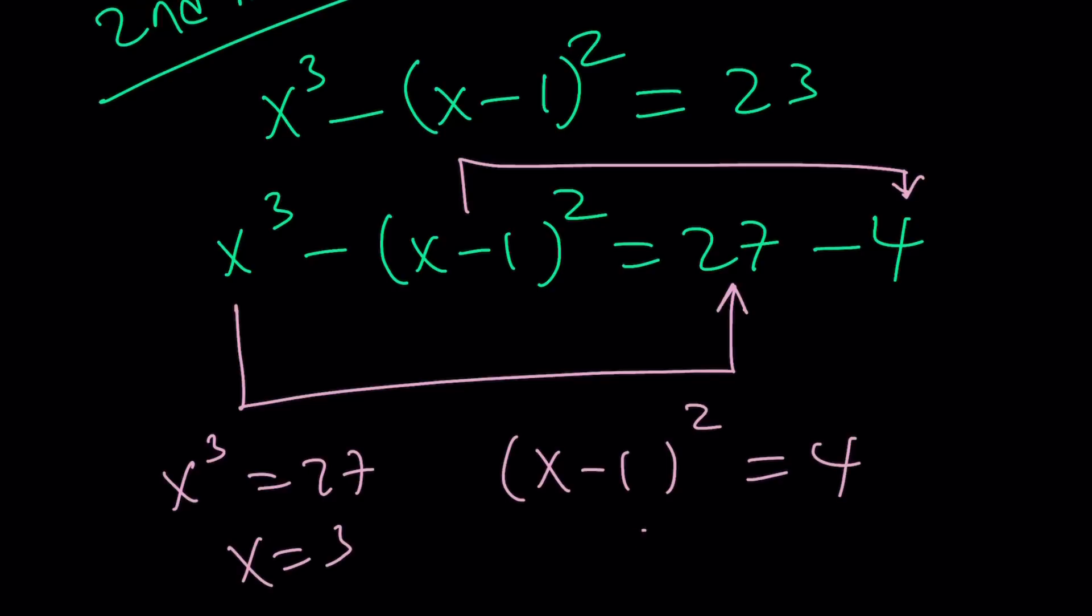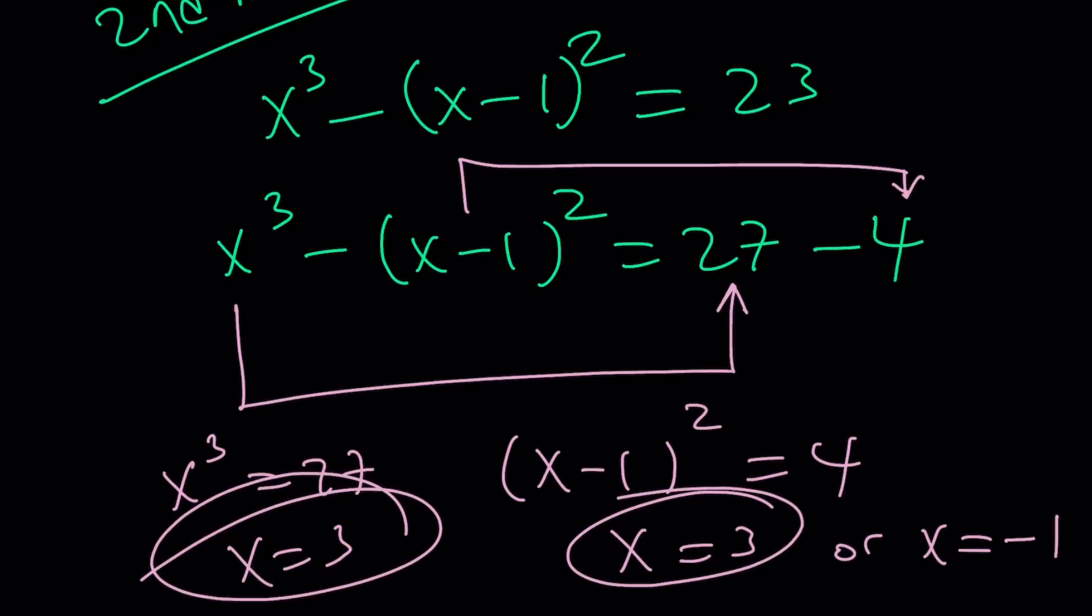So, if x³ equals 27 and (x - 1)² equals 4, makes sense to you? Then we're good. This means x equals 3. This means x equals 3 or x equals negative 1. I don't care about negative 1. x equals 3 works for me, so I'll take it. Yay. This works.